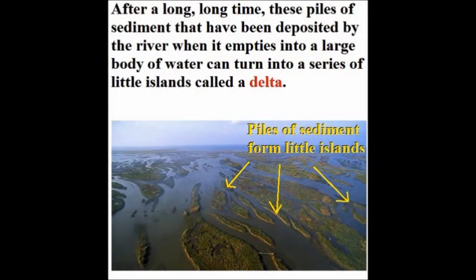After a long, long time, these piles of sediment deposited by the river when it empties into a large body of water can turn into a series of little islands called a delta.